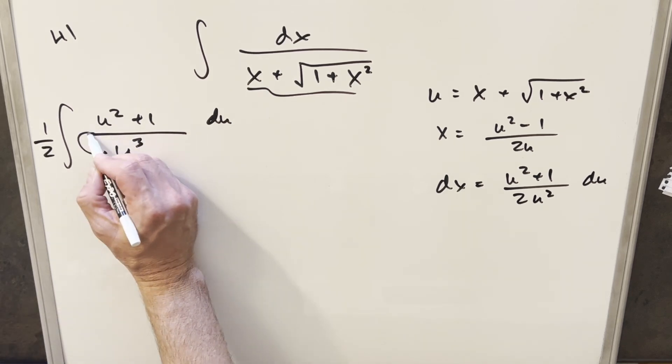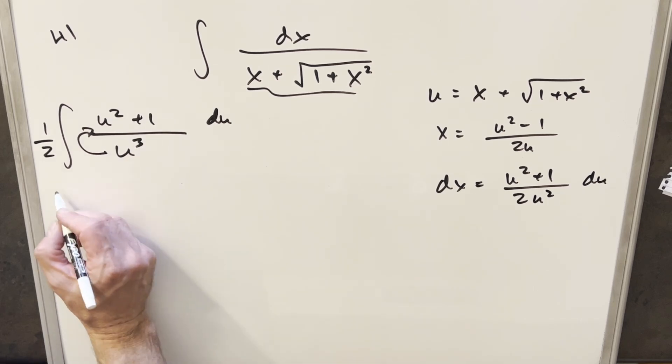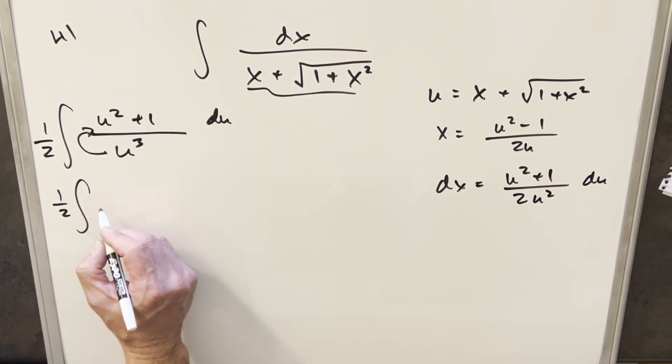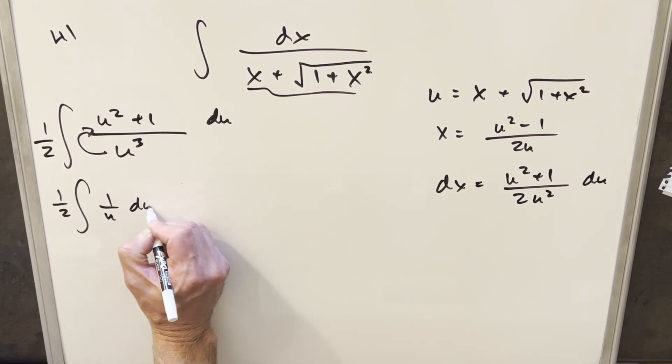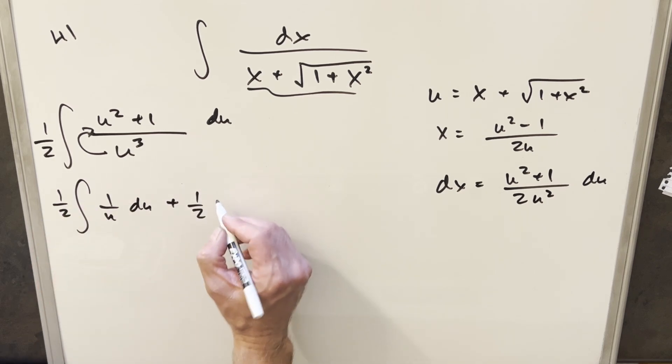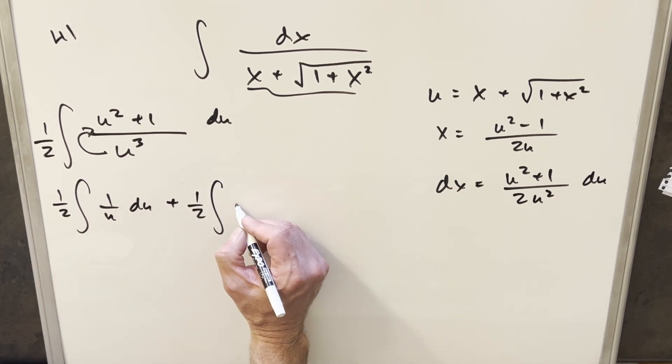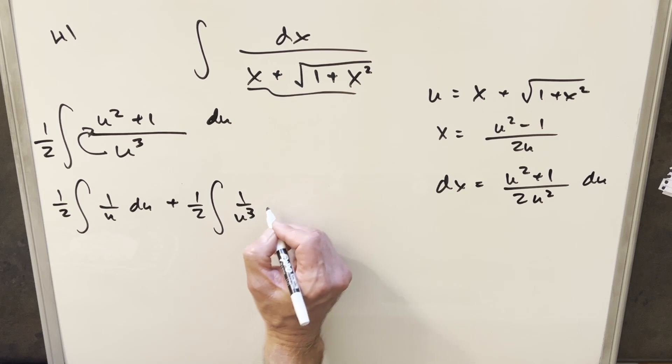And then from here, let's just divide this u cubed into the numerator and split this into two integrals. So for the first one, we have 1 half 1 over u du, second one distributing in the 1 half. This is going to become integral of 1 over u cubed du.